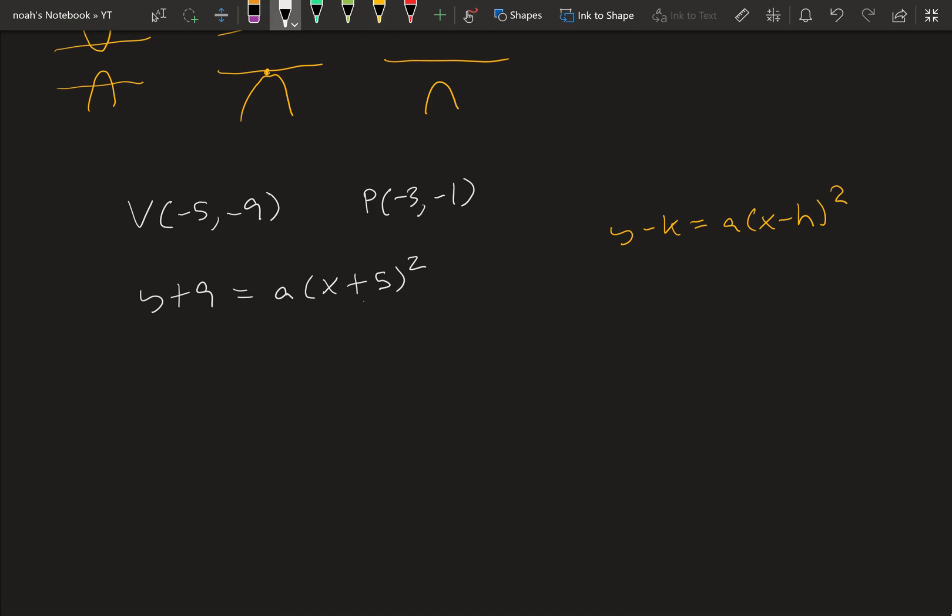And then we can plug in this point right here into this equation for x and y to solve for a. So we have negative 1 plus 9 is equal to a times negative 3 plus 5 squared. This is equal to 8 is equal to a times 2 squared, which is 8 equal to 4a, so a is equal to 2.